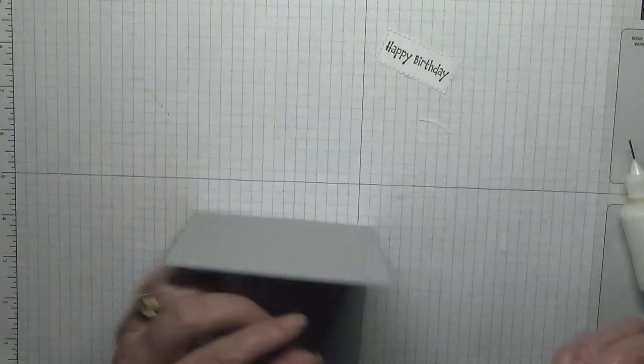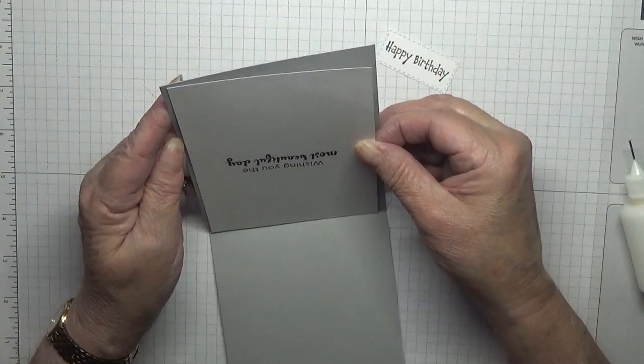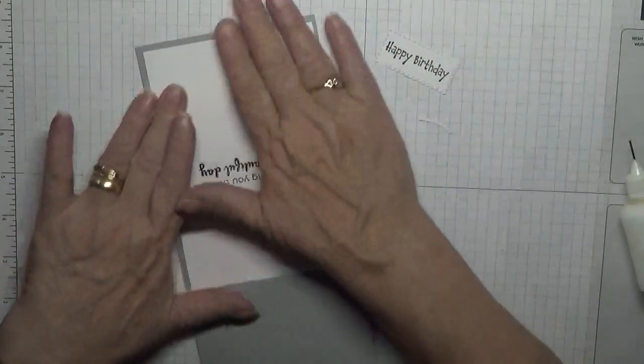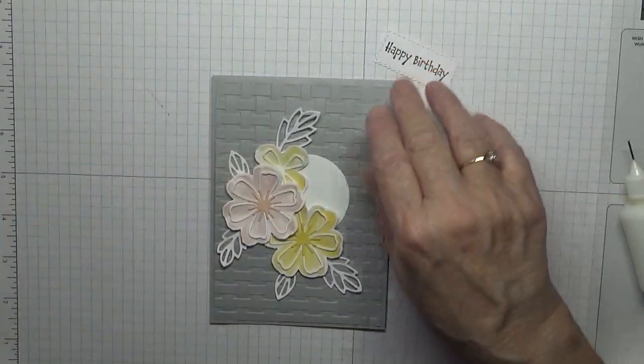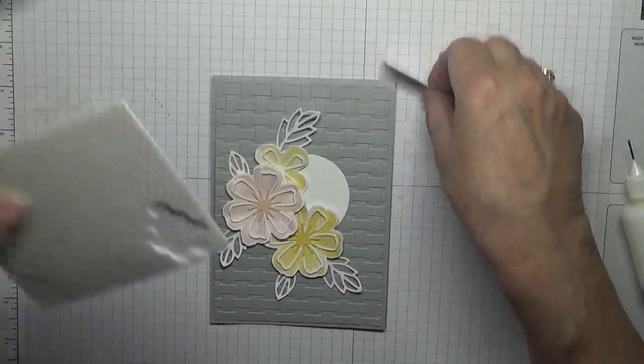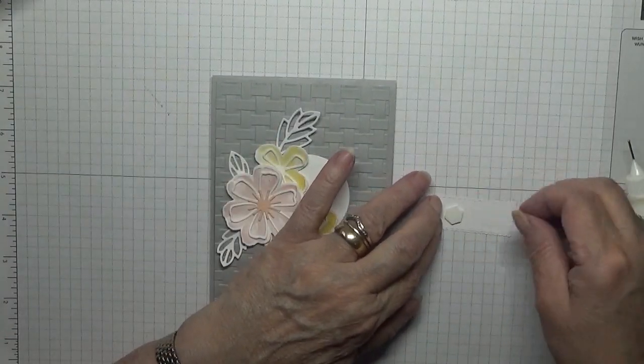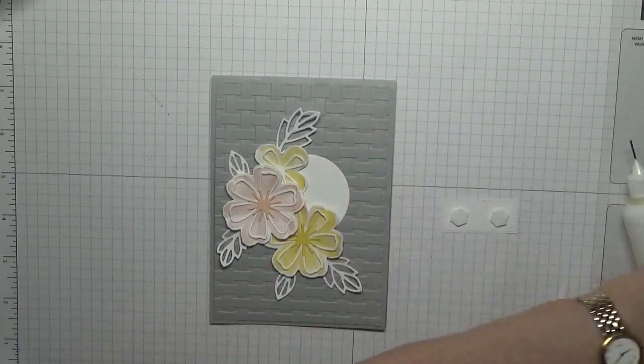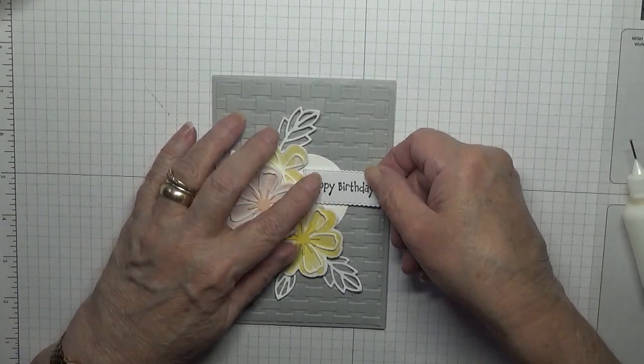Let's put the inside piece in, and then I'm grabbing a couple of dimensionals and placing that just under the flower.